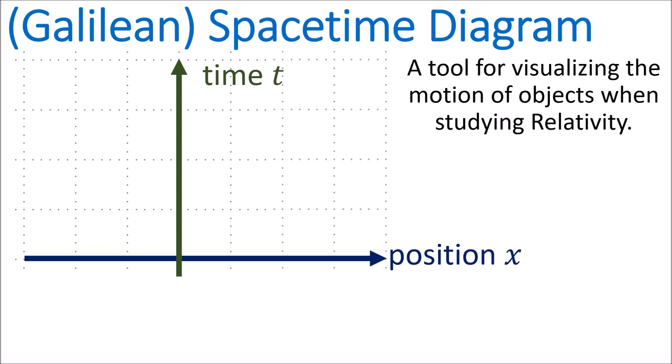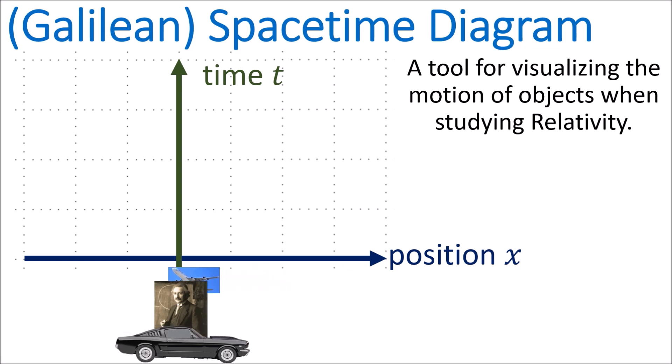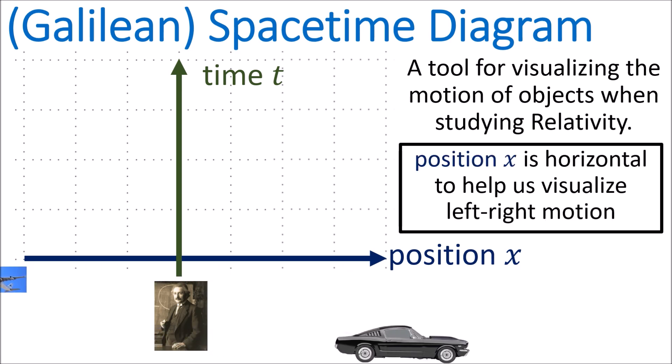You might think this is pretty strange since most physics classes put time on the horizontal axis. But in relativity, we're often interested in tracking the motion of objects to the left and right, so it makes sense to have position on the horizontal axis. Putting time on the vertical axis has become a standard convention in just about every relativity textbook, and I'll be following this convention.